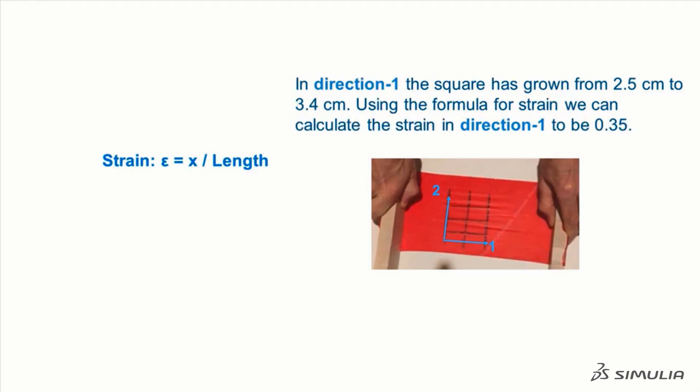In direction 1, the square has grown from 2.5 cm to 3.4 cm. Using the formula for strain, we can calculate the strain in direction 1 to be 0.35.